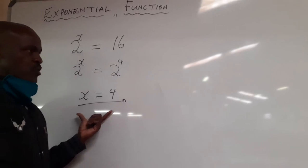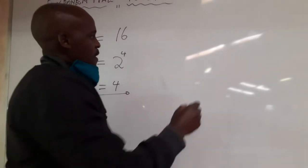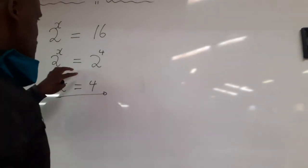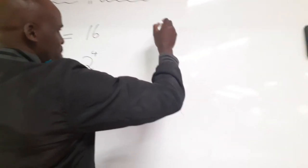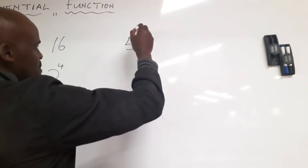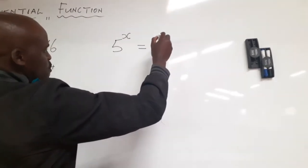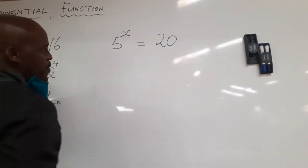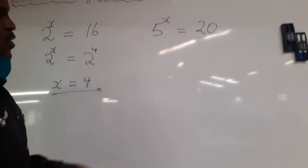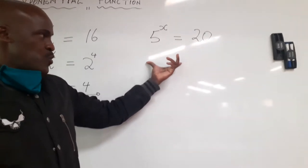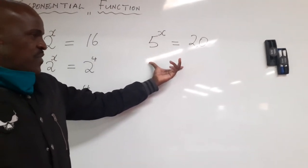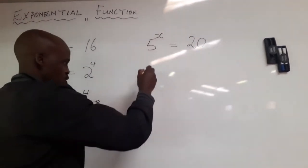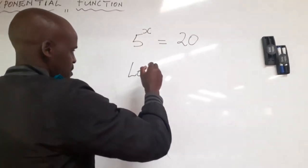There are some cases where you will find that you are unable to make the bases to be the same. For instance, 5 exponent x is equal to 20. We can't make the bases to be the same in this case. Therefore, it's here where we are going to apply another topic that we call logarithms.